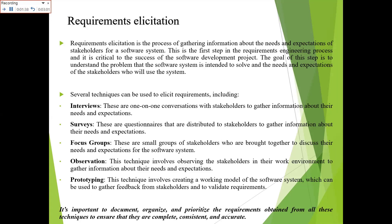The second technique is survey. In this session, surveys are distributed to the stakeholders to gather information about their needs and expectations. The next is focus group, which is a small group of stakeholders brought together to discuss their needs and expectations, with the aim of interaction between certain customers and stakeholders. Next is observation, where we observe the needs and expectations of the stakeholder in their work environment and collect and summarize that information. Finally, prototyping is a working model of the particular system created so that the customer can easily understand the system's functionality.